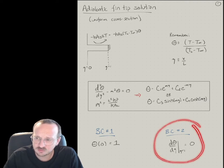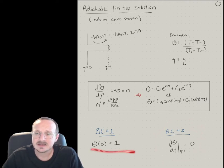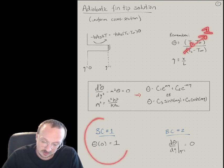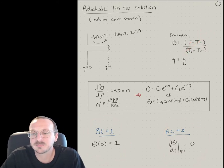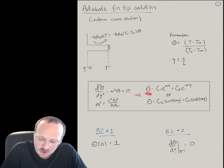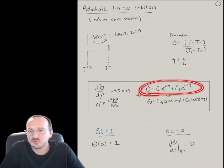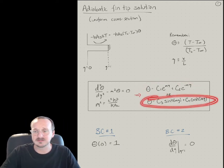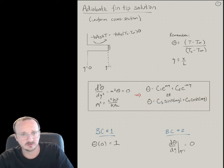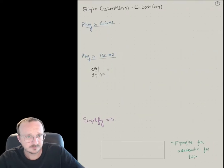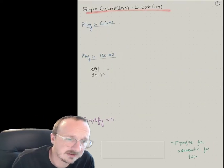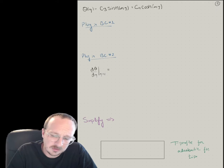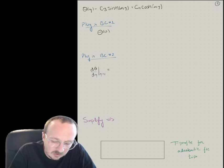All we've done is change boundary condition two. The temperature at the base of the fin is still the fin base temperature — you plug T_B in, you get one. So theta equals one at the base of the fin, and there's no heat loss at the tip. For the infinite fin we used exponential functions to plug in the boundary conditions. This time, let's use the hyperbolic sine and cosine functions, as it will be a little more straightforward for plugging in the boundary conditions.